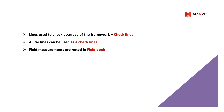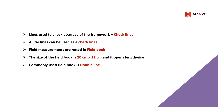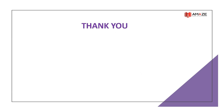Field measurements are noted in a field book; the size of a field book is 20 cm × 12 cm and it opens lengthwise. The commonly used field book is the double-line field book; for large-scale surveying with detailed discussions, a single-line field book is used. Thank you for watching and see you in the next part.